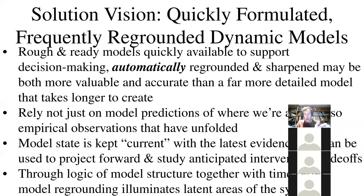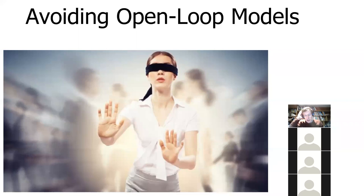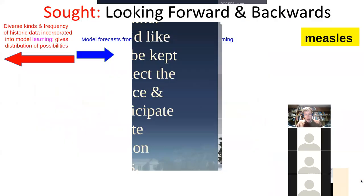What we'd like are frequently regrounded models — models constantly kept current with the latest evidence, re-synced so we always have a model that's fresh and able to look forward. For more than a decade I've been keen on avoiding open-loop models. Instead of building a model, declaring it worthy, and just living with increasing divergence, I want a model that every day is re-synced with new data — like a weather app.